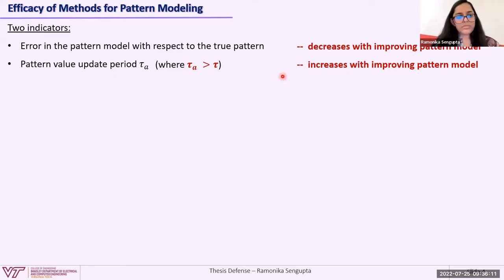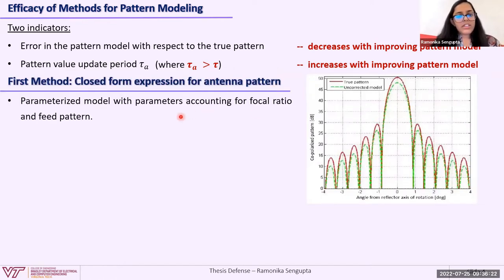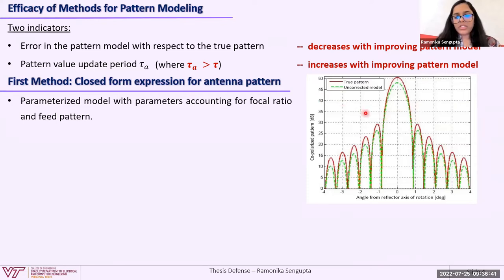Now that I have explained the problem statement, I'll outline the methodology of pattern modeling and highlight the results. We start by getting a closed-form expression for the antenna pattern — a parameterized model with parameters accounting for focal ratio and feed pattern for the reflector system. This figure shows the comparison between the true pattern shown by the red line and the pattern obtained from this first method shown by the green dashed line, called the uncorrected model because adaptive correction has not been applied to it yet.